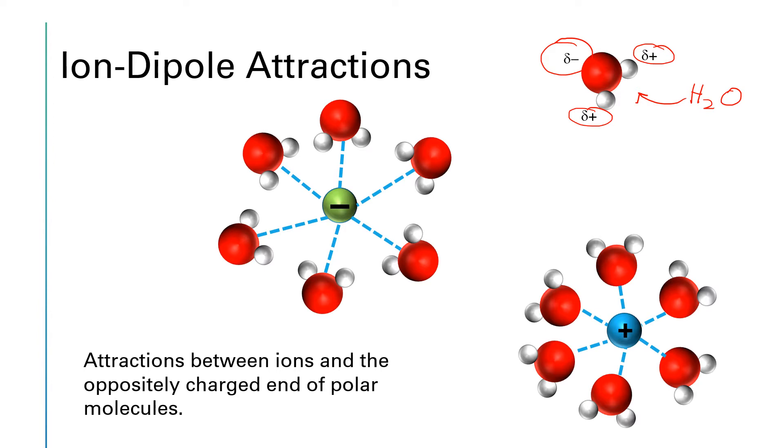It used to really bother me when I saw these drawings that we have two partial positives and only one partial negative. If it's a neutral molecule, shouldn't they all cancel out? Well, most textbook authors don't bother. They just say this end of the molecule is positive, this end is negative, and they may make more than one charge in a spot. But they generally just say there's a partial positive end, there's a partial negative end. Overall, everything will add up to zero.